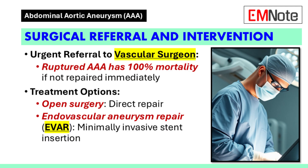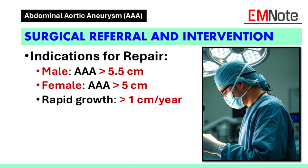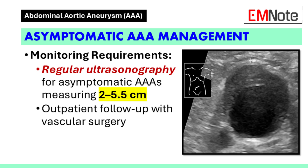Referral and surgical intervention. A ruptured abdominal aortic aneurysm carries a 100% mortality rate if not repaired immediately. Urgent referral to a vascular surgeon is mandatory. Treatment options include open surgery for direct repair of the aneurysm, or endovascular aneurysm repair, which involves femoral artery catheterization and stent insertion. For incidental or asymptomatic aneurysms, refer males with an aneurysm greater than 5.5 centimeters or females with an aneurysm greater than 5 centimeters for repair, and monitor aneurysms measuring 2 to 5.5 centimeters with regular ultrasonography and outpatient follow-up.